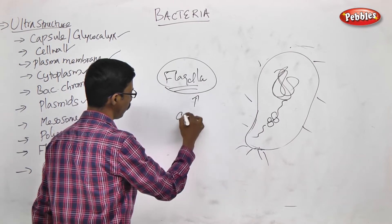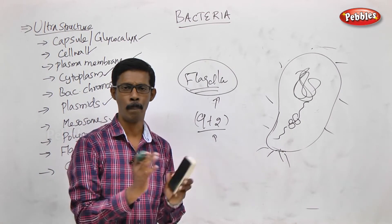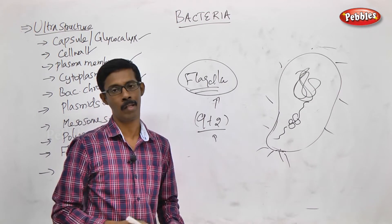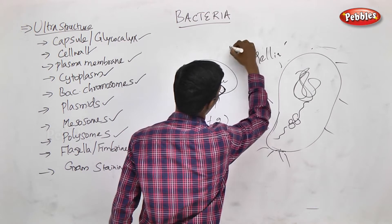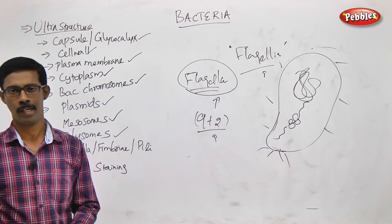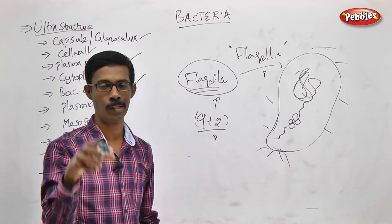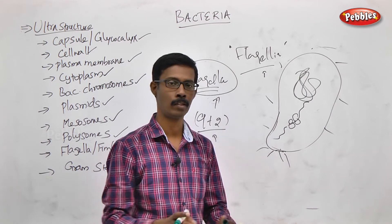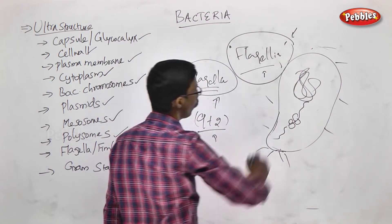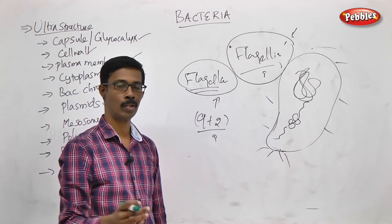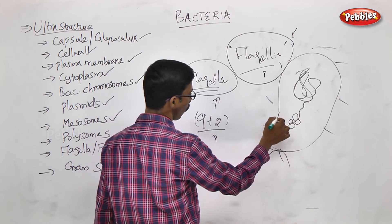In eukaryotic cells, flagella are arranged in microfibrils — 9 plus 2 microfibrils in the structure — they are a complex, membrane-bound structure. In prokaryotes, they are made up of a single type of protein called flagellin, in multiple copies, forming a filamentous structure attached to a basal plate. Flagellin moves the bacteria from one location to another.